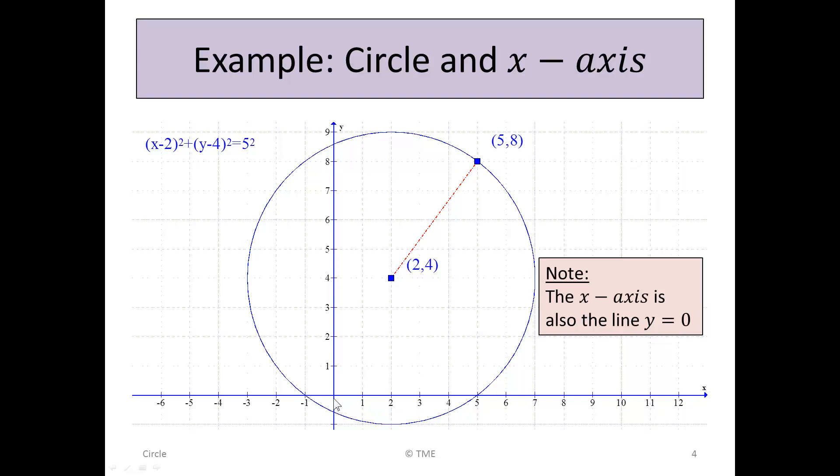There's a note that states that the x-axis is also the line y = 0. If we take the points on the x-axis, the second variable is always 0. So the y is 0. So in effect, this line here is the y = 0 line.